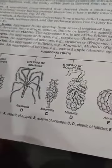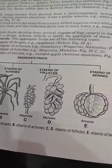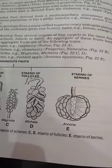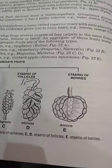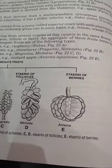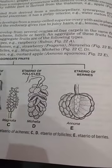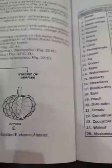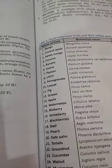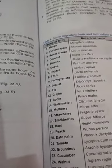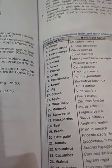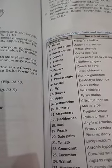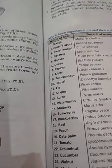An aggregate fruit develops from several free carpels of the same flower — multiple ovaries of one flower. Examples include drupes. A composite fruit, also called a multiple fruit, develops from the entire inflorescence. These are fused fruits; pineapple is an example of a composite fruit.